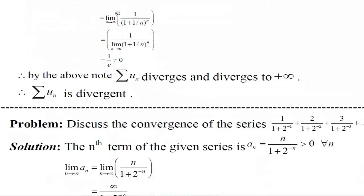Now we apply the limit. The numerator 1 is a constant with no n, so we apply the limit only to the denominator: limit of (1 + 1/n)^n as n tends to infinity. We know this equals e. Therefore, the limit equals 1/e, which is not equal to 0, because e is between 2 and 3.